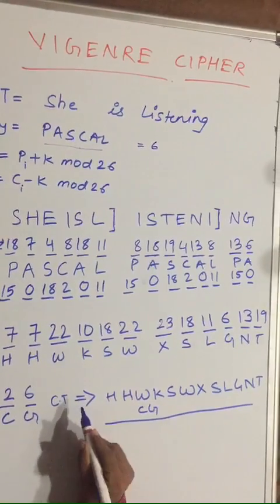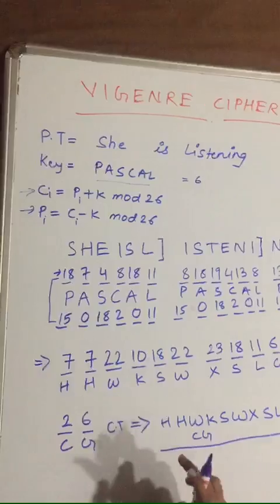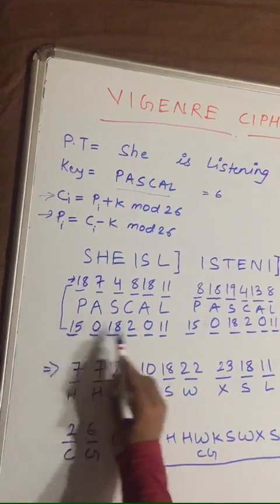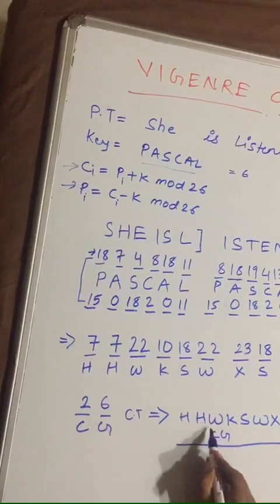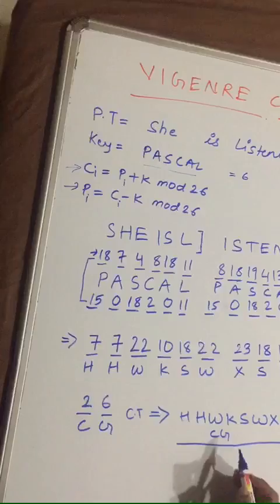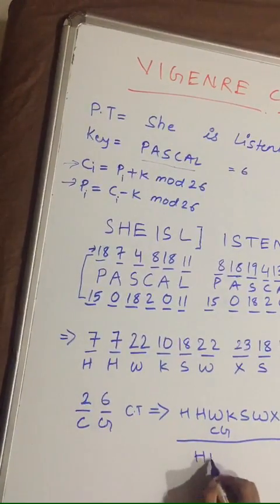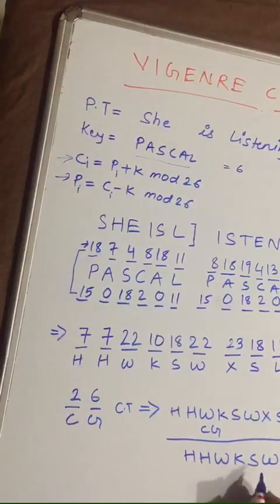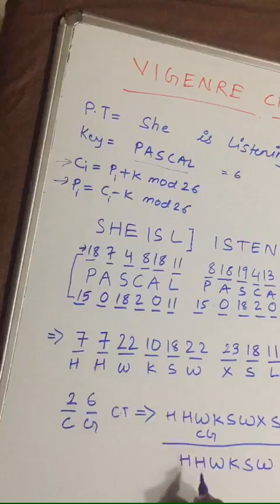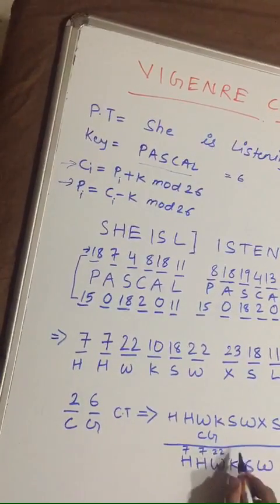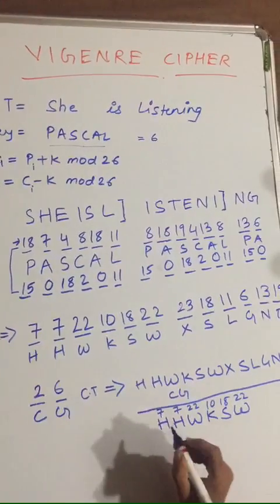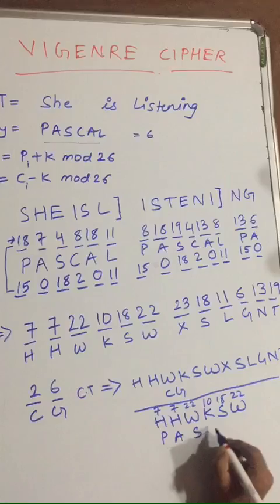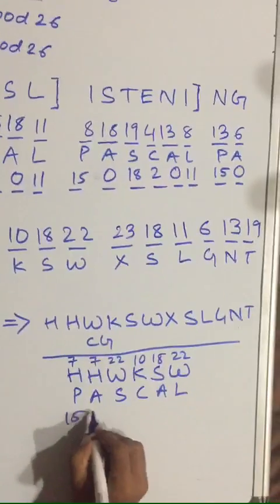Now if you want to get from ciphertext back to plaintext, you follow the same procedure: divide into 6-character blocks and write the key 'PASCAL' below each block. We'll work through the first block H-H-W-K-S-W, which has numeric values 7, 7, 22, 10, 18, 22.